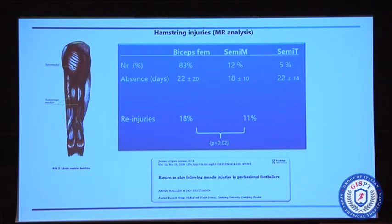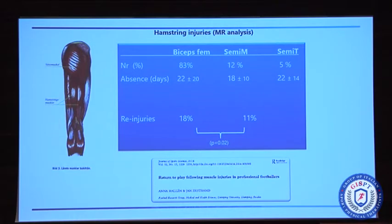However, the re-injury rate was significantly different. There is a much higher risk of re-injury in biceps femoris injuries and significantly less in injuries to semitendinosus and semimembranosus. This might have a practical influence: if you have a biceps femoris injury, be careful — maybe it's better to be safe than quick. Keep them a little longer in rehabilitation to avoid re-injuries. If you have an injury to semimembranosus or semitendinosus, maybe you can push them a little more.